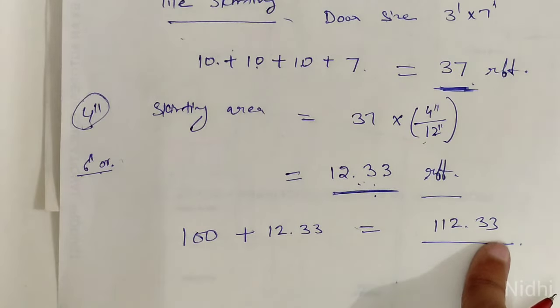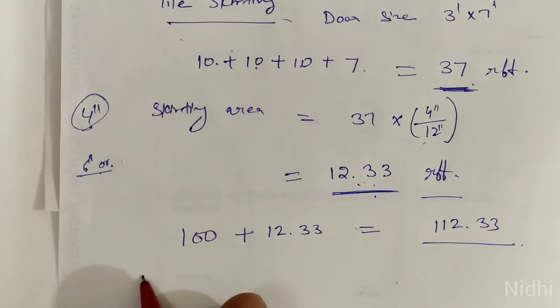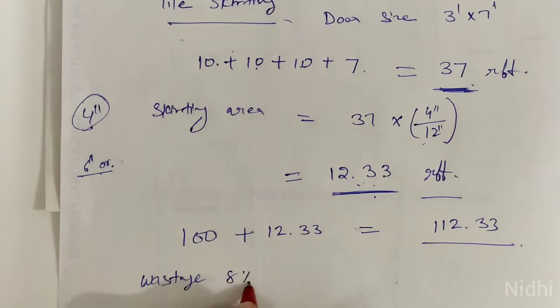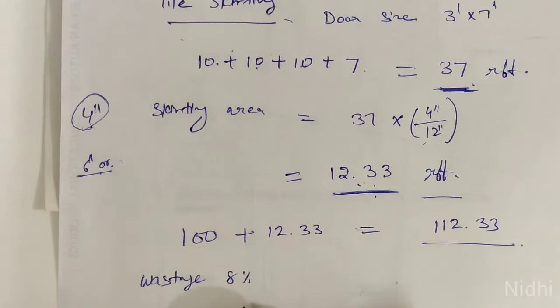When you estimate the tiling calculation, always you have to use wastage: 8%. 8% wastage we have to take in cost estimate or in tiling estimate, everywhere.